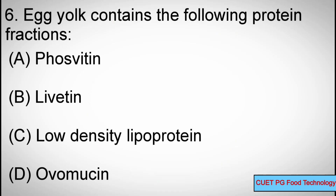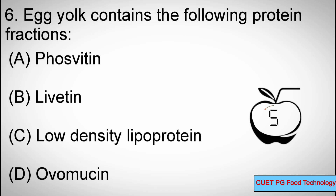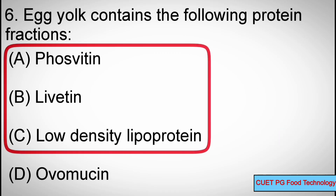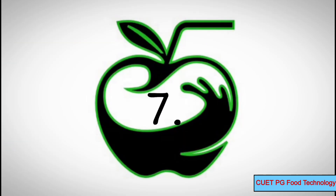Question number six: Egg yolk contains the following protein fractions. Options: A) Phosphatin, B) Livetin, C) Low density lipoprotein, D) Ovomucin. Correct answers are: Phosphatin, Livetin, and Low density lipoprotein.